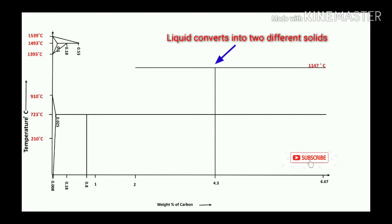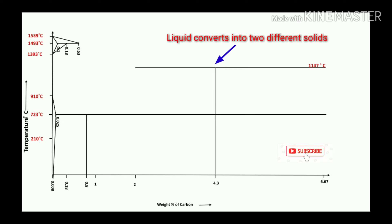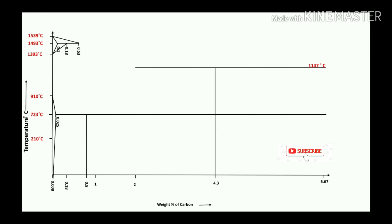One more reaction is the eutectic reaction, which generally occurs at 1147°C and 4.3% carbon. You can join these lines on the diagram.